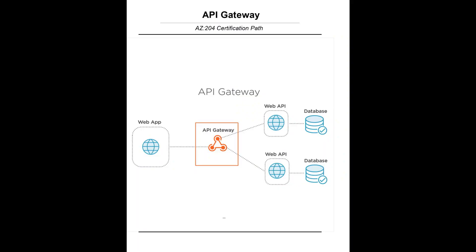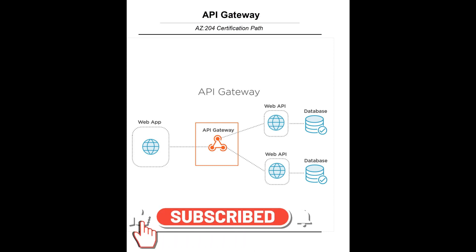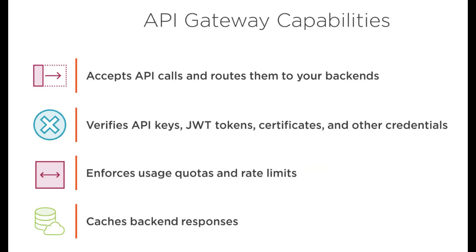This API management handles all those routing decisions, and the API that receives the request will process it and send back the response. This is the frontline component. In another typical example, your web application interacts with the API gateway, the gateway forwards the request to the backend APIs, the backend API does its processing and finally returns the response data.